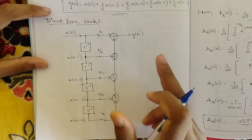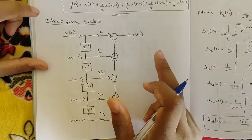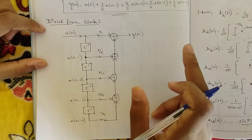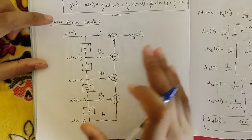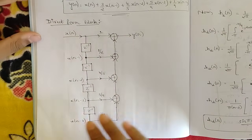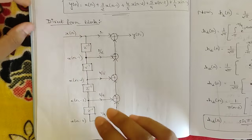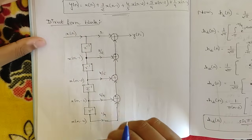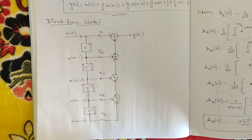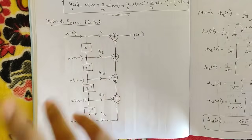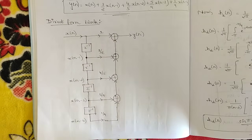Recall the linear phase condition: the first and last term coefficients should be the same, the second and second-last coefficients should match, and so on. If satisfied, a separate block structure of direct form is used. This was the complete solution for question 7c.